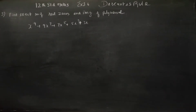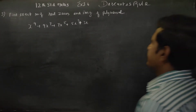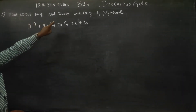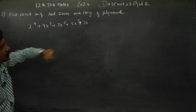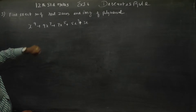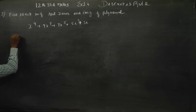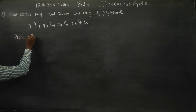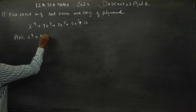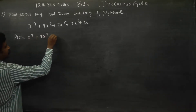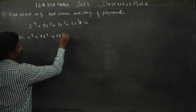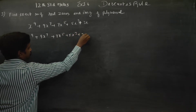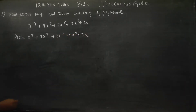Hello students. In exercise 3.6, sum number 5, find the exact number of real zeros and imaginary roots of the polynomial. Let us name this as p(x). p(x) is equal to x⁹ + 9x⁷ + 7x⁵ + 5x³ + 3x.